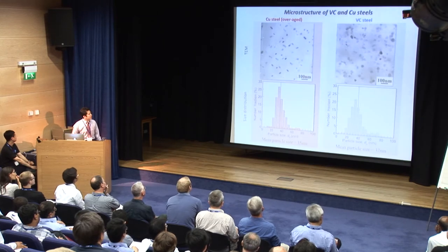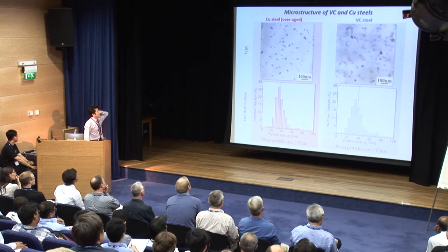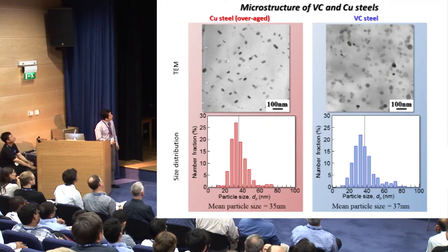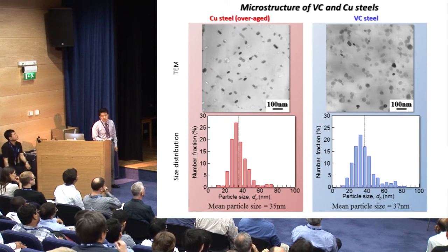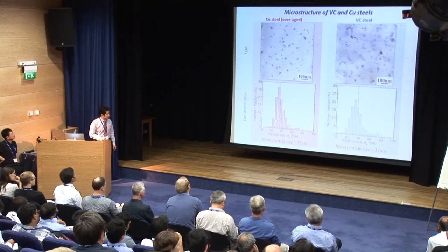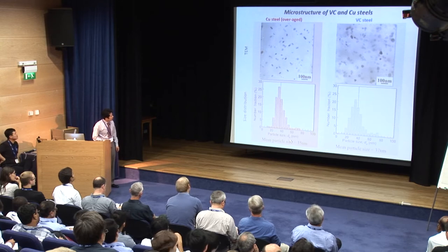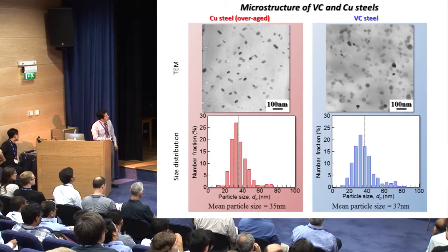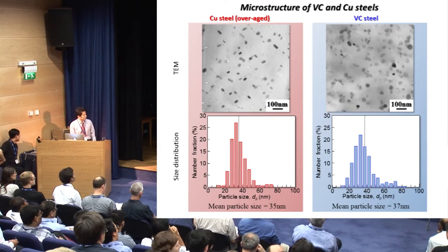By using TEM, we could observe the dispersed particles. This one is the epsilon copper particle, and this one is the V-C carbide particle. As you can see, they have similar morphology, size, and size distribution. The mean particle size of the epsilon copper particle is 35 nanometers, and that of the V-C steel was 37 nanometers — almost similar.